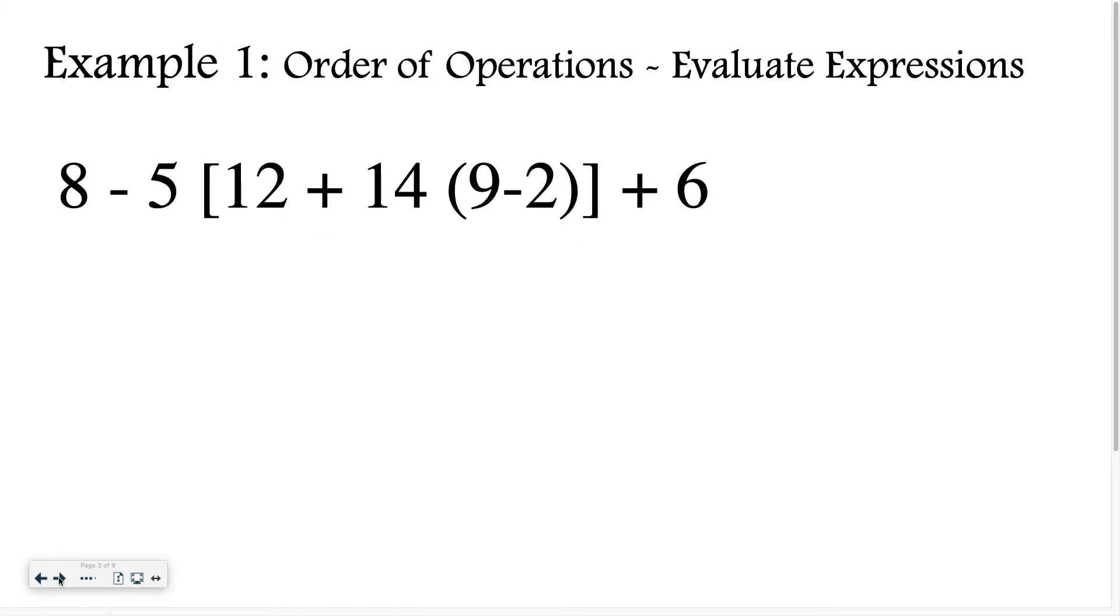I'm going to show you how we solve this first example. As you can see, I have both the square brackets and the curved parentheses. The curved parentheses are inside the square brackets. When dealing with order of operations, you always start with the innermost parentheses. In this case, that nine minus two, so that's going to become seven.